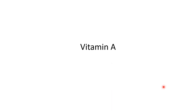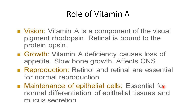Starting with vitamin A: it is a component of the visual pigment rhodopsin and assists mainly in night or dark vision. The first symptom of vitamin A deficiency is night blindness. Vitamin A also plays a vital role in the visual pathway, and deficiency can give rise to many signs and symptoms involving the eyes.